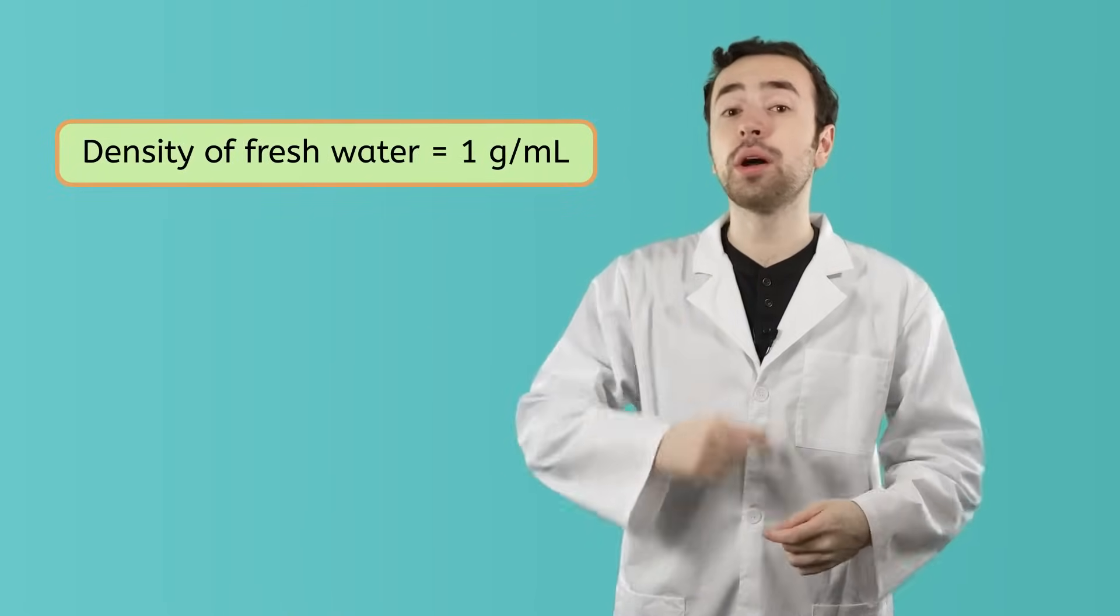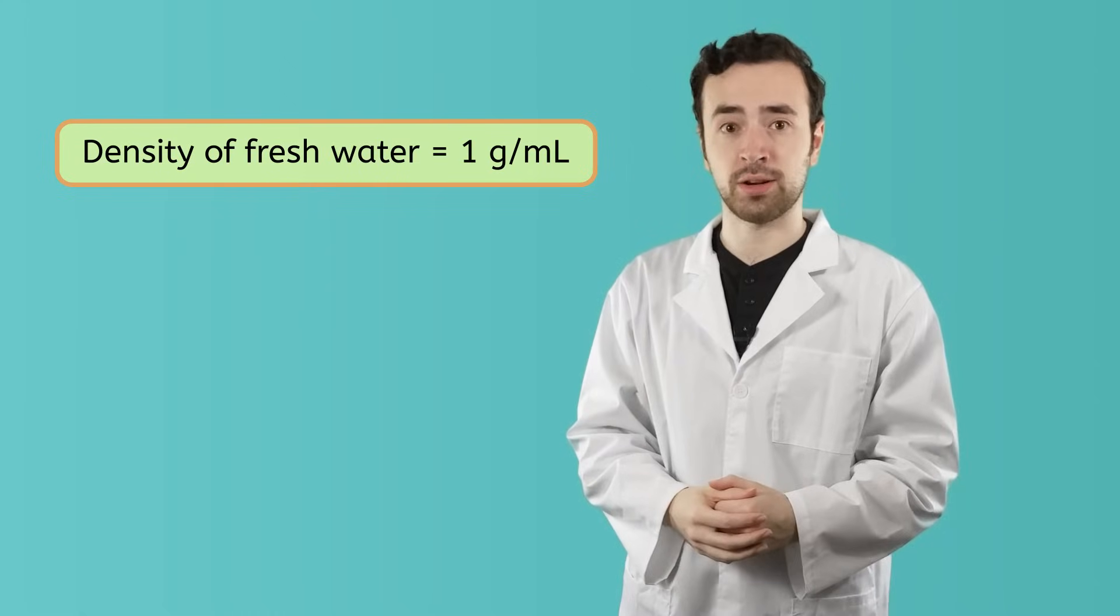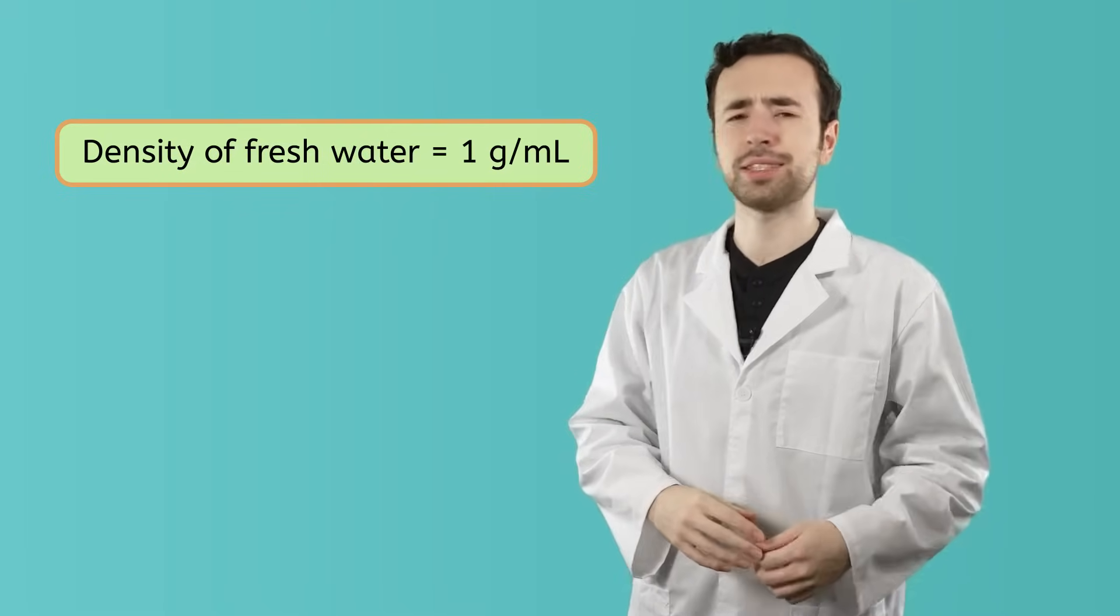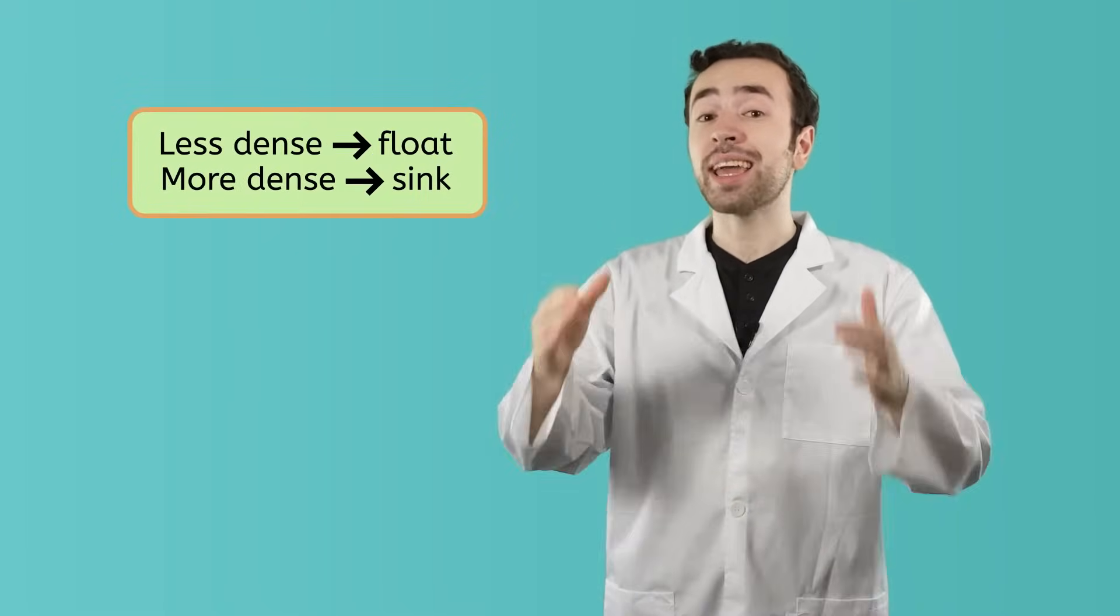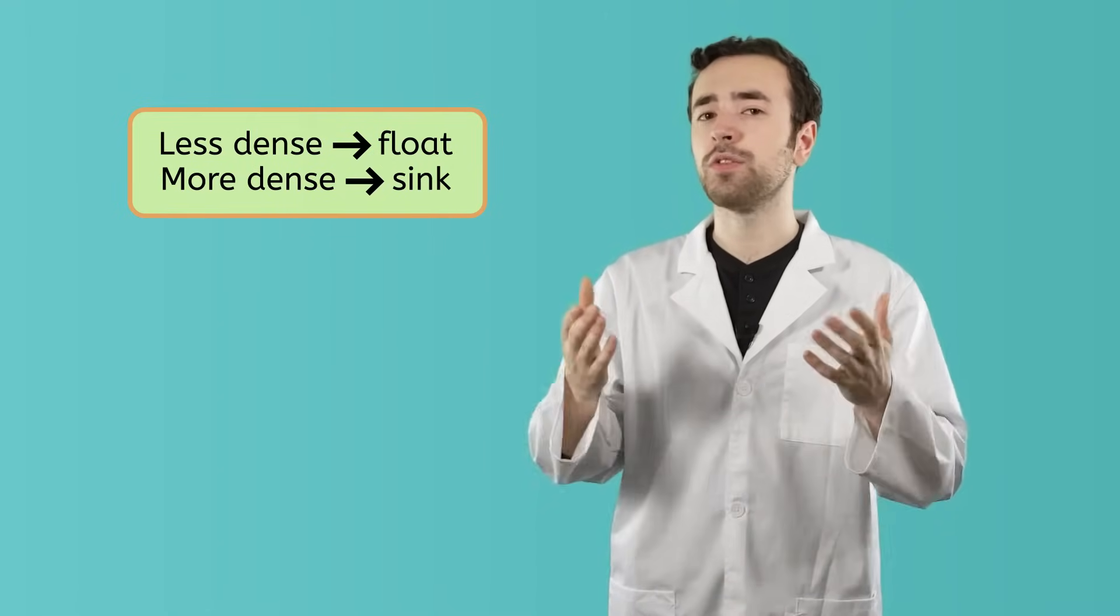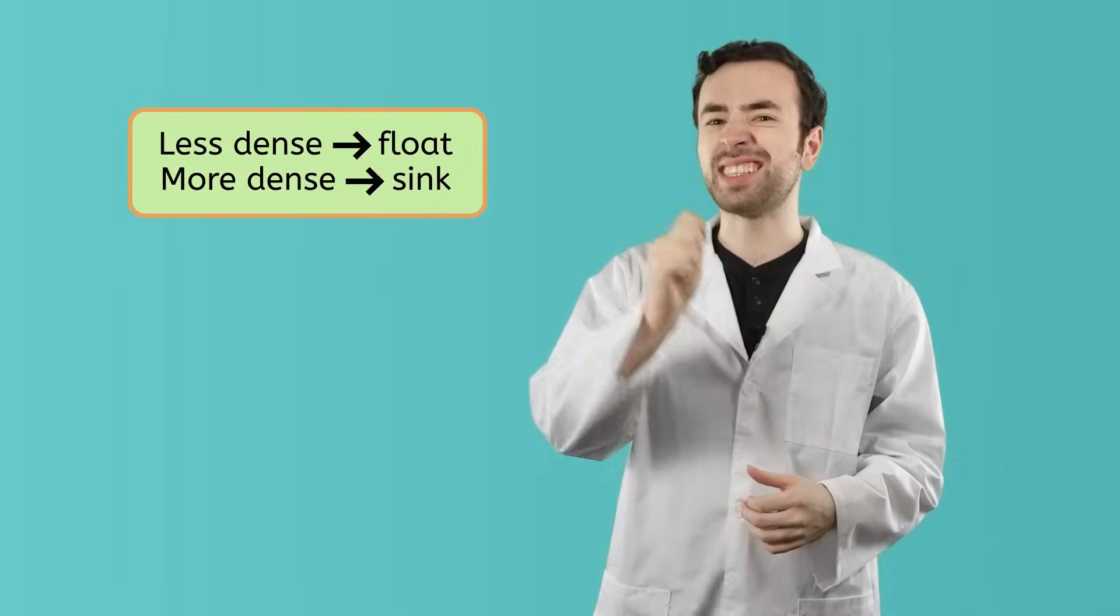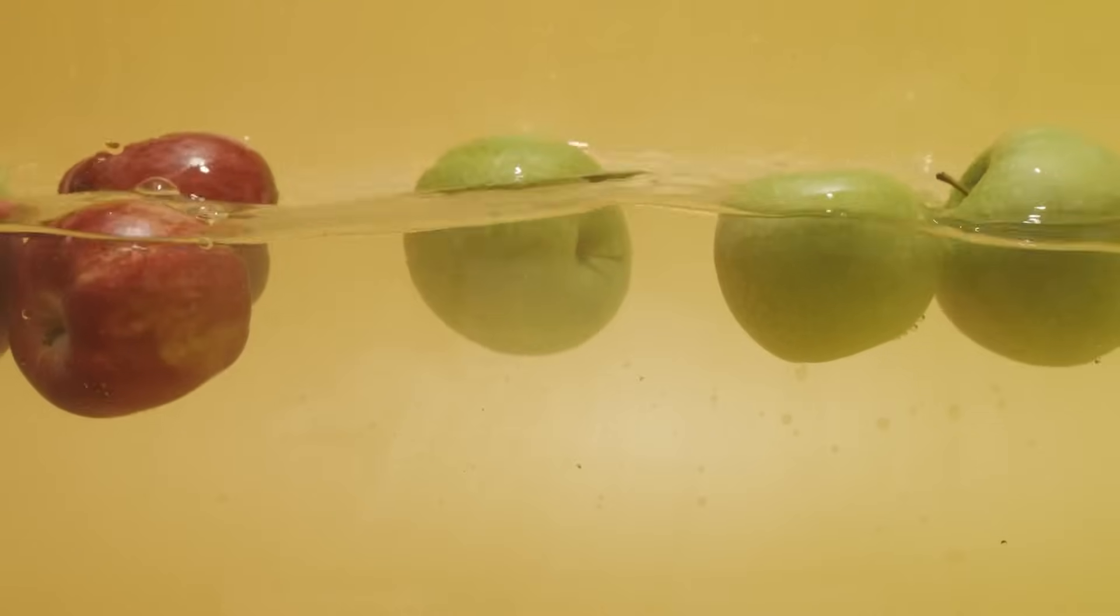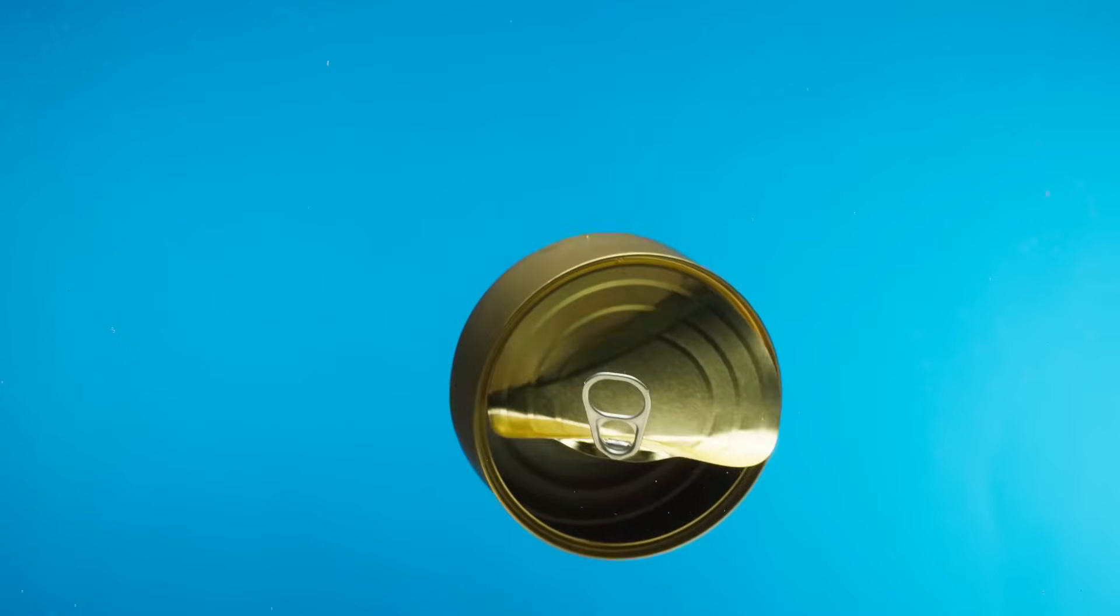I think we're getting closer to answering the mystery of why my phone sank here. And I think it's all going to come down to the density of water. The density of fresh water is one gram per milliliter, meaning that every milliliter of water has a mass of one gram. Well, that's awful convenient. If an object has a lower density than water, it will float. However, if an object is denser than water, it will sink. For example, an apple is less dense than water, so it floats. A tin can, on the other hand, is denser than water, so it sinks.